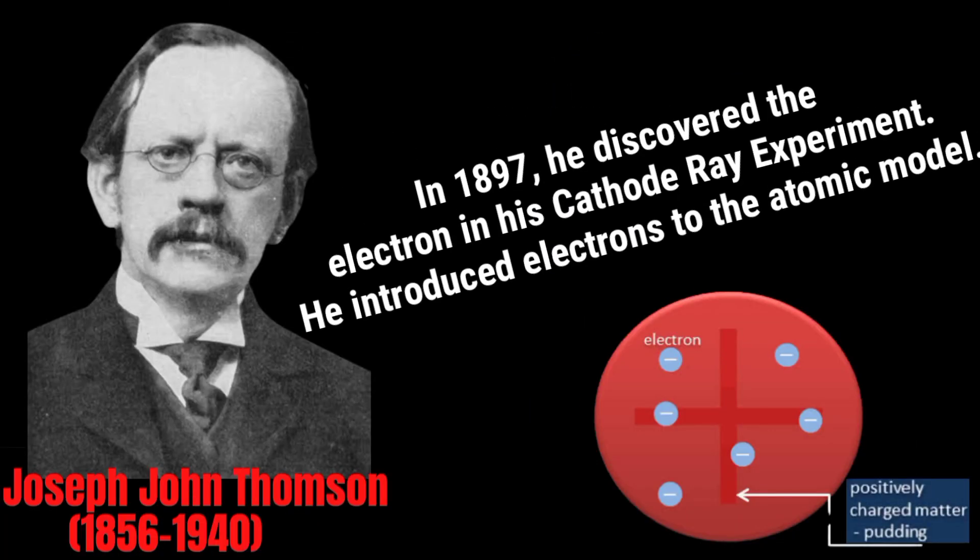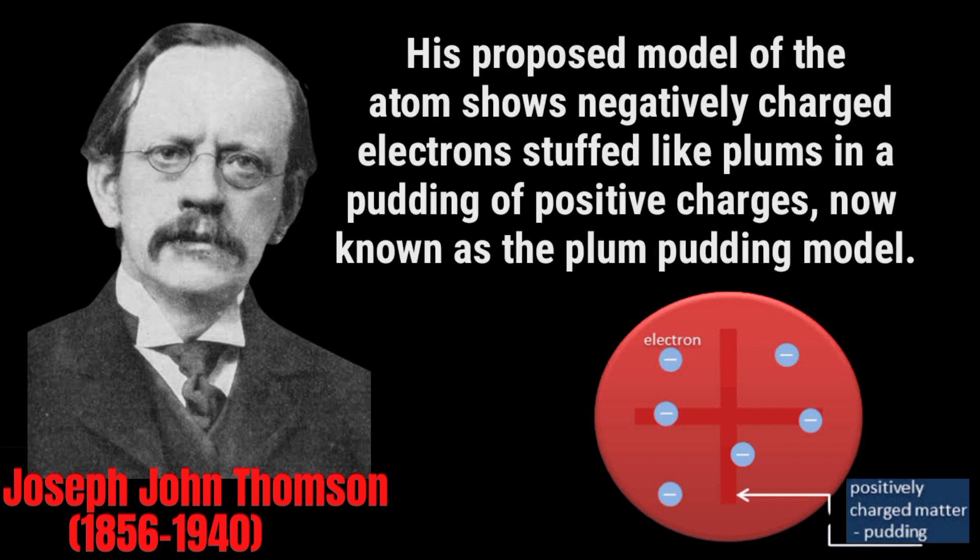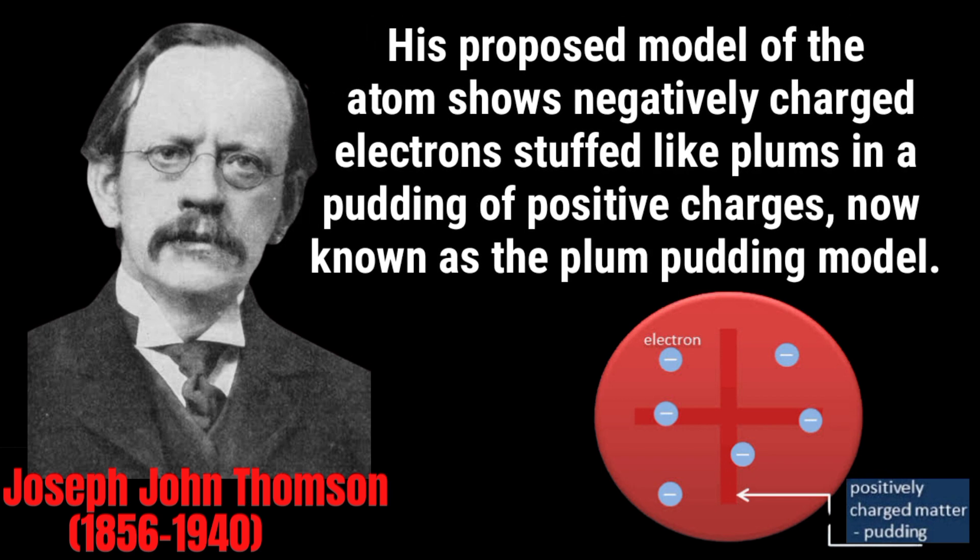In 1897, Joseph John Thomson discovered the electron in his cathode ray experiment. He introduced electrons to the atomic model. His proposed model of atoms shows negatively charged electrons stuffed like plums in a pudding of positive charges, now known as the plum pudding model. Thomson's experiments provided the first evidence that atoms are made of even smaller particles.